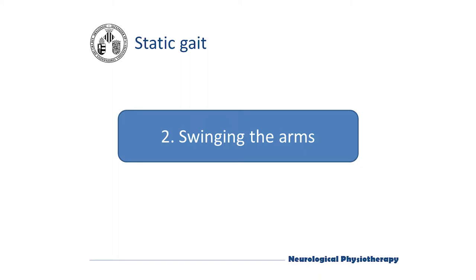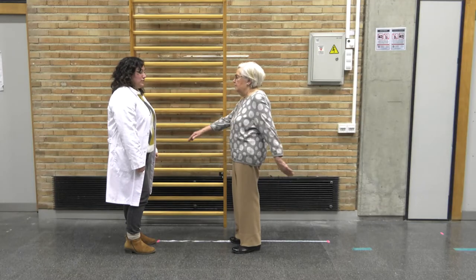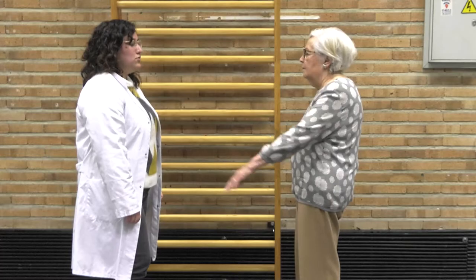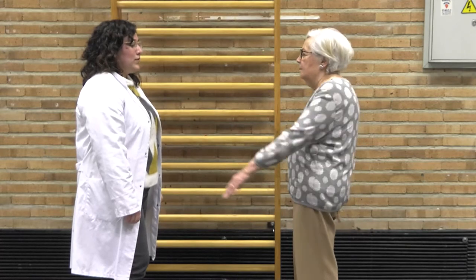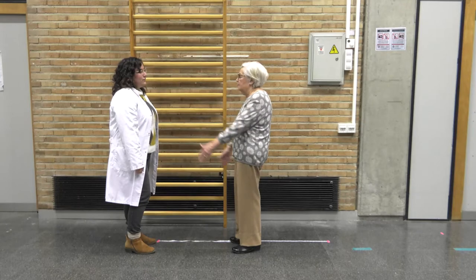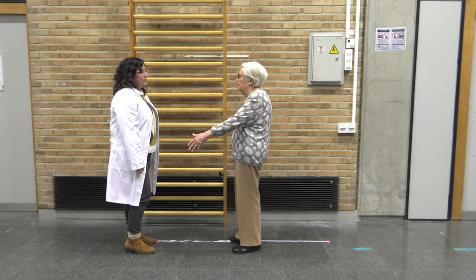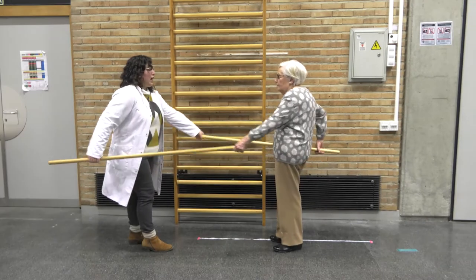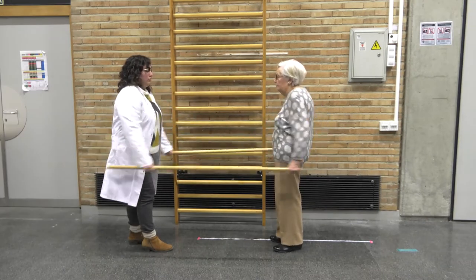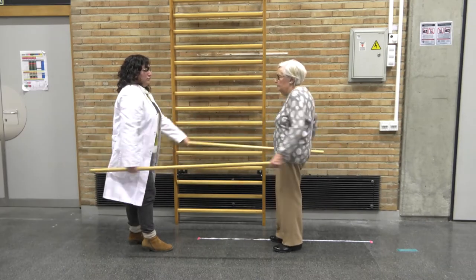Swinging the arms. This can be done at a free rhythm or facilitated by elements such as sticks controlled by the physiotherapist. By increasing the range of the arms, the patient tends to rotate the trunk, which decreases with the progress of the disease.